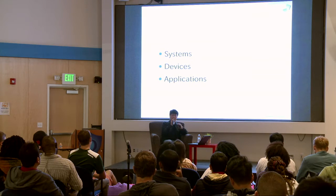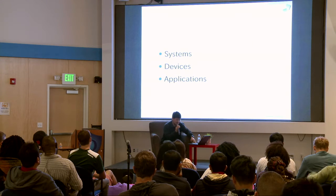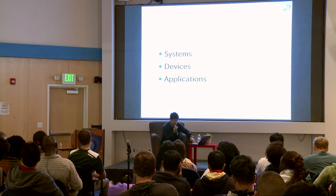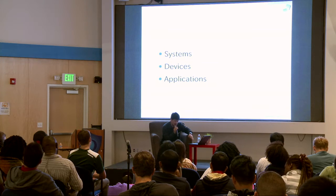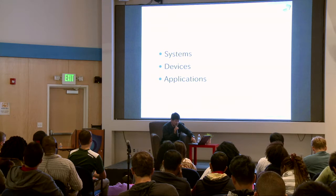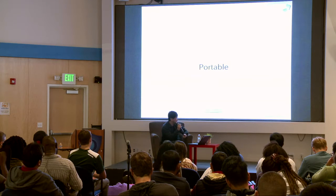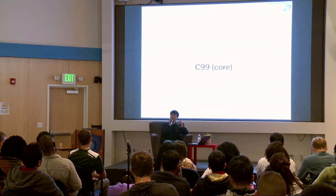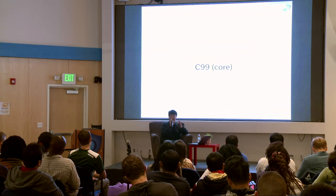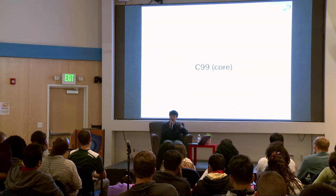MRuby can be embedded in systems, devices, or applications. In order to do that, MRuby should be very portable. Its core and virtual machine is entirely written in C99 only, so you don't have to worry about other APIs, system calls, or anything like that. As a result, MRuby can run on any CPU that runs C99.